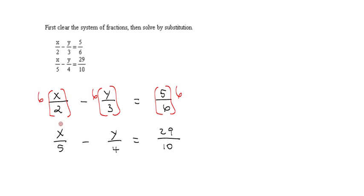For the second fraction, the LCD is—we've got a 5, a 4, and a 10. So the LCD here is going to be 20. So we're going to multiply everything by 20, both sides.